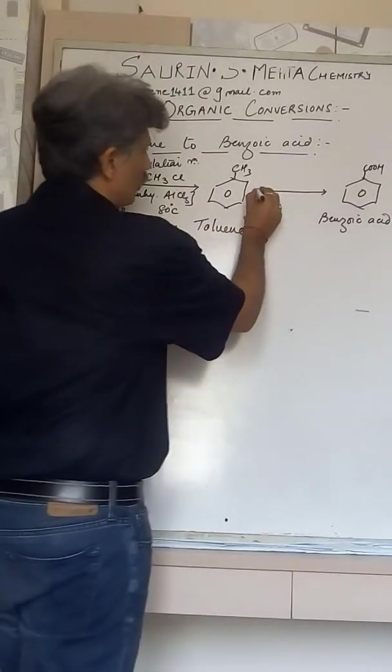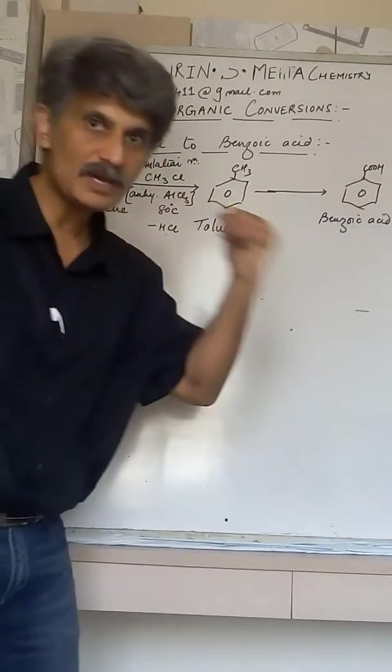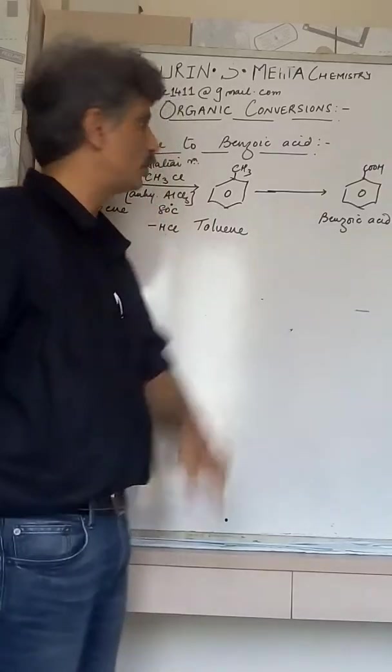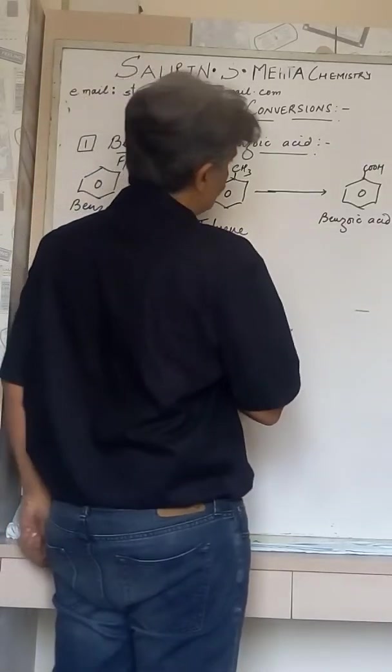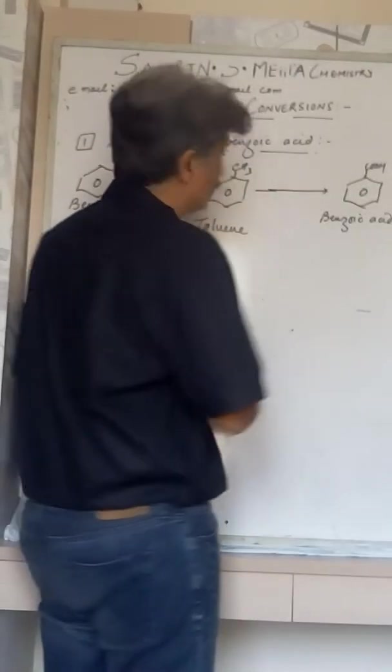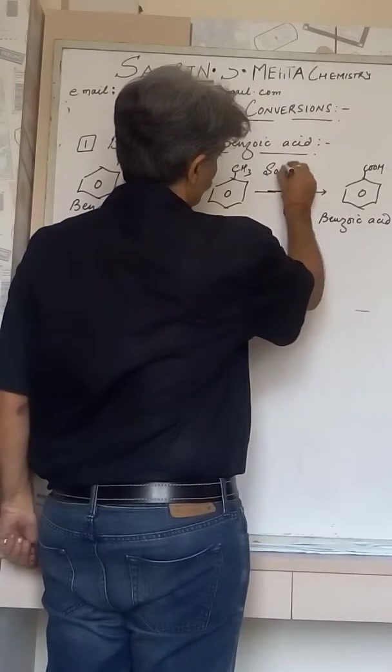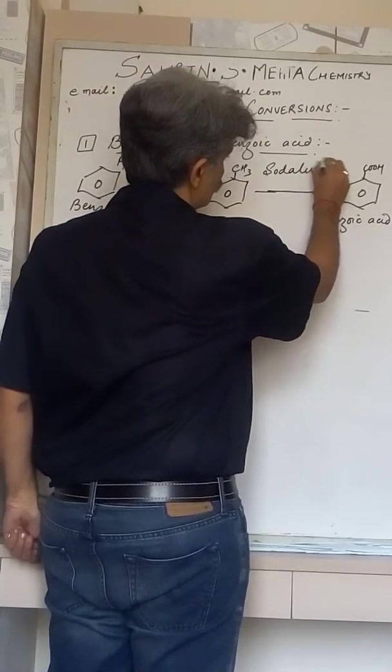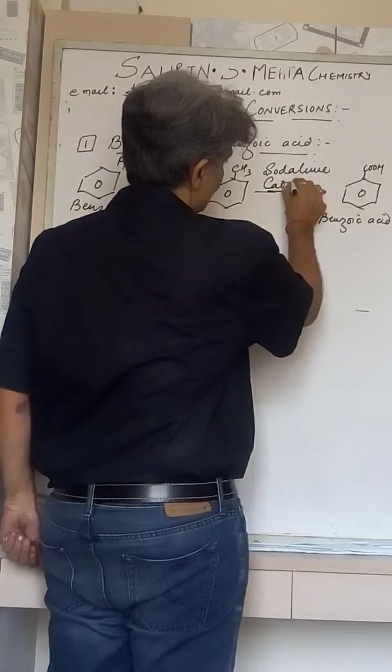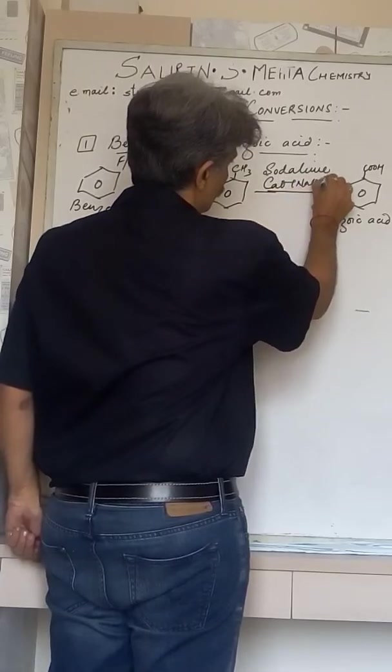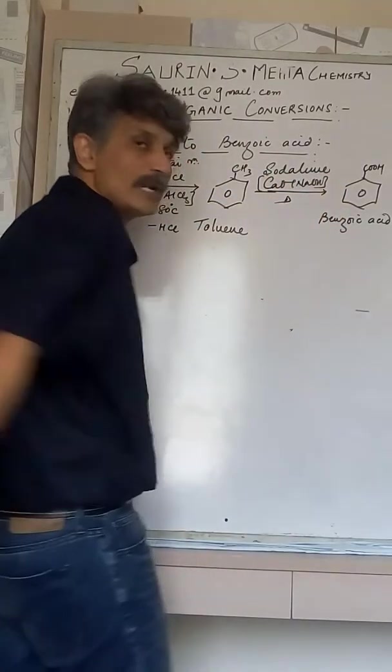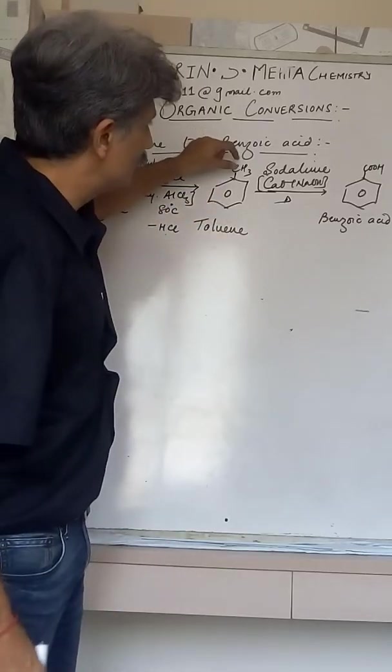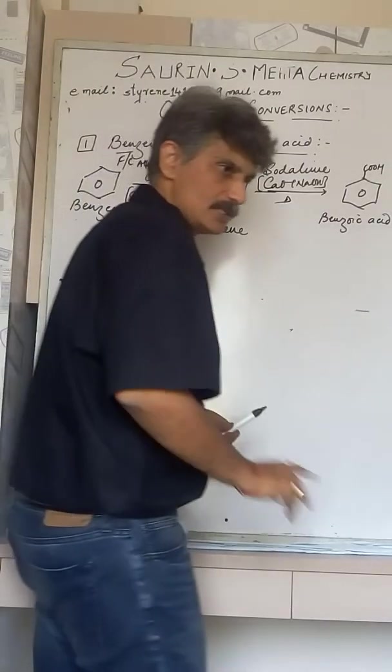And this toluene now can give you benzoic acid. Do you remember? Now the last episode I taught you that if toluene undergoes reaction with soda lime, you now remember soda lime, calcium oxide and NaOH, if toluene is heated with soda lime, the sorry, oxidation is taking place over here.